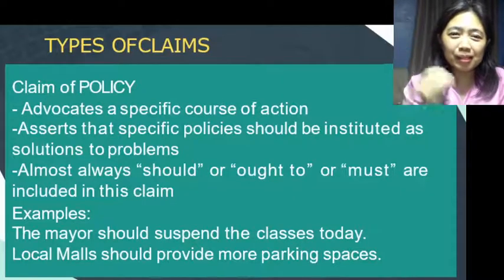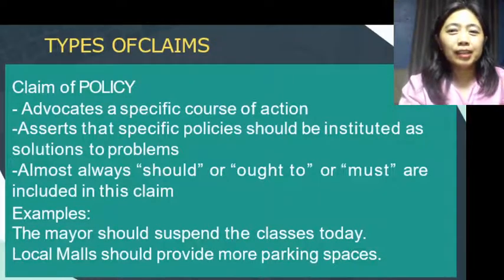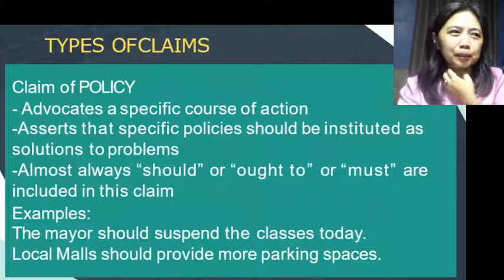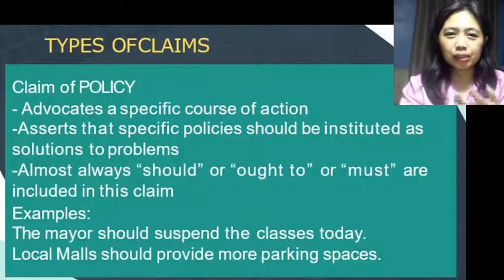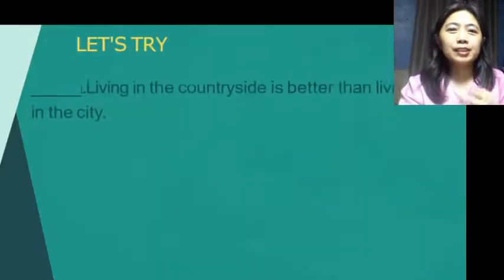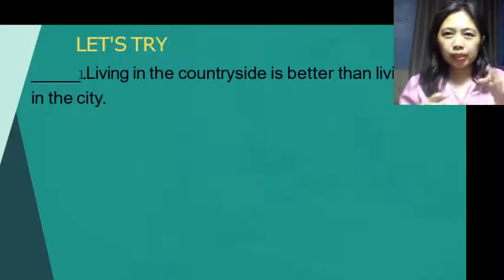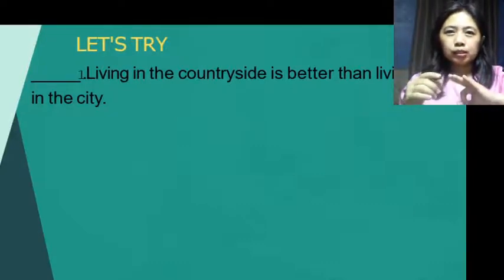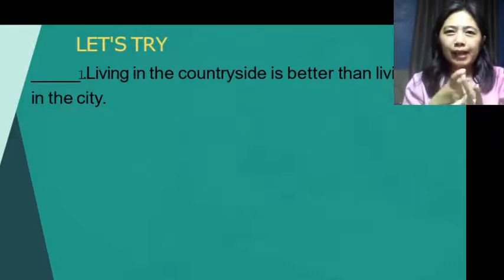This is an easy topic — module week 3 for Reading and Writing Skills. Let's try some examples. We will identify which of the three types of claims each sentence belongs to: claim of fact, claim of value, or claim of policy.